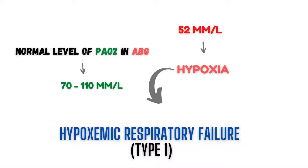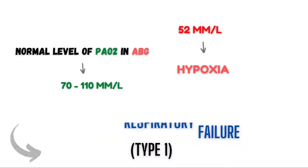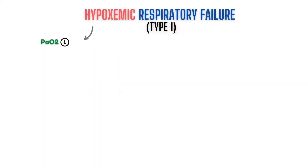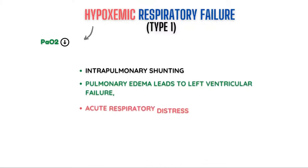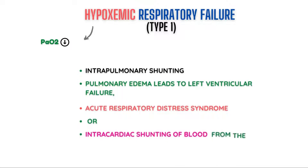Now, what causes Type 1 respiratory failure and how do we manage it in ICU settings? As discussed, hypoxia is low oxygen concentration in blood. Intrapulmonary shunting of blood produced by airspace filling or collapse, pulmonary edema leading to left ventricular failure, and acute respiratory distress syndrome, or intracardiac shunting of blood from the right to left-sided circulation — all cause it.